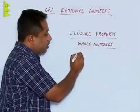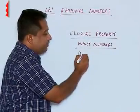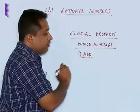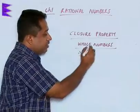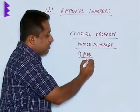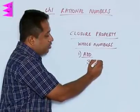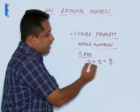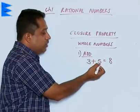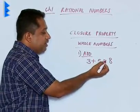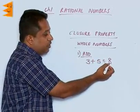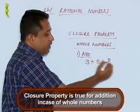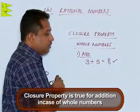When we look at addition, we take two whole numbers, let us say 3 and 5, the result is 8. When we add two whole numbers, we find that the result is also a whole number. So we can say the closure property is true in case of addition for whole numbers.